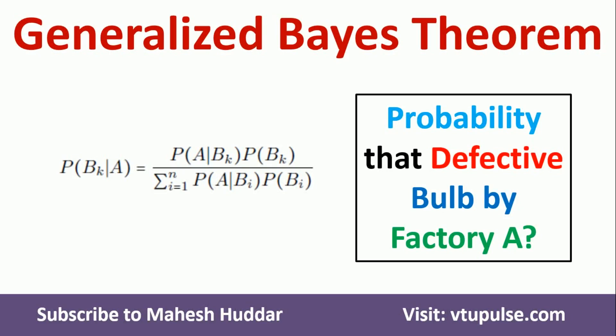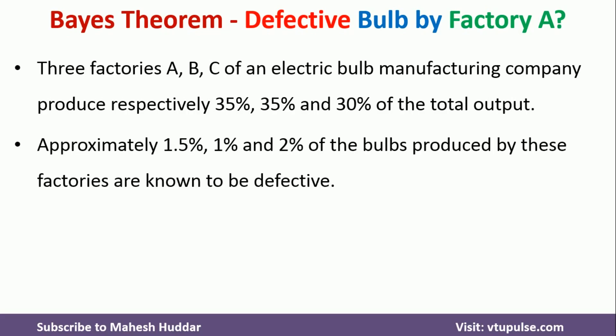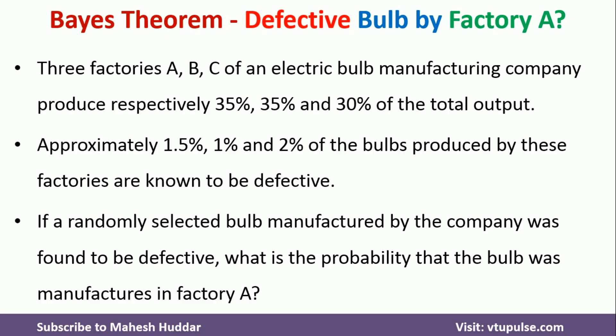Welcome back. In this video I will discuss how to apply the Generalized Bayes Theorem to find the probability that a bulb is defective and it is manufactured at factory A. We have been given three factories A, B, and C that produce electric bulbs. Factory A produces 35% of the total bulbs, factory B produces 35%, and factory C produces 30%.